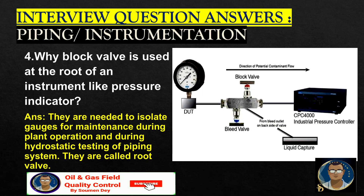Why is a block valve used at the root of an instrument like a pressure indicator? As you can see in the photo, they are needed to isolate gauges for maintenance during plant operation and during hydrostatic testing of the piping system. They are called root valves.